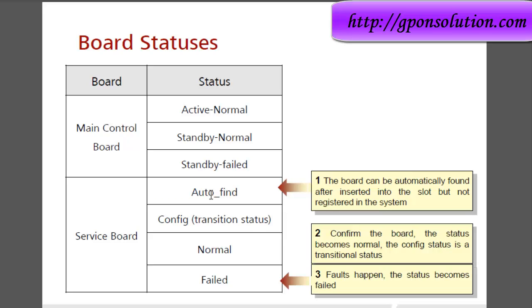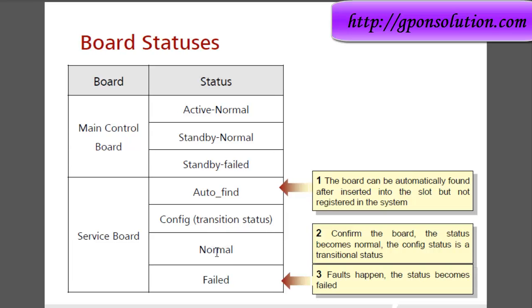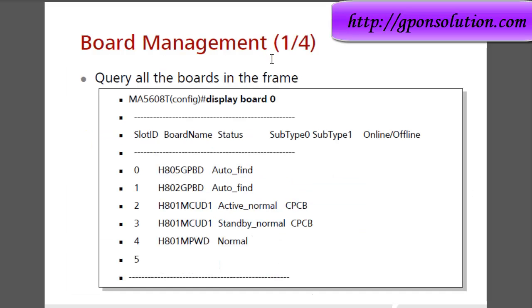Auto-find mode: when a card is inserted into a slot but not added or confirmed, it is in auto-find mode. When you add or confirm a board, it goes from auto-find mode to normal mode. Normal mode means the board is operational and running. Failed status is shown when any fault occurs.